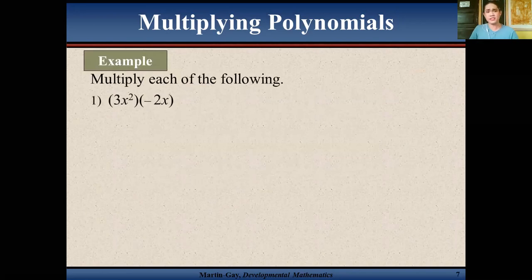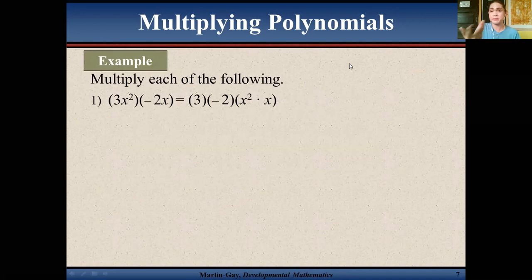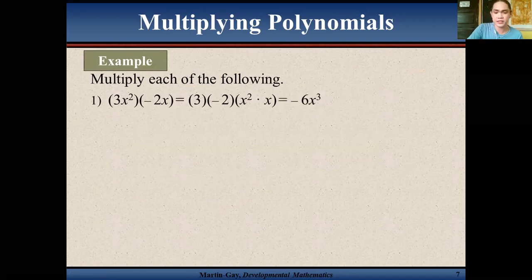For example, 3x² times negative 2x: we multiply 3 times negative 2, then x² times x. That gives you negative 6x³.